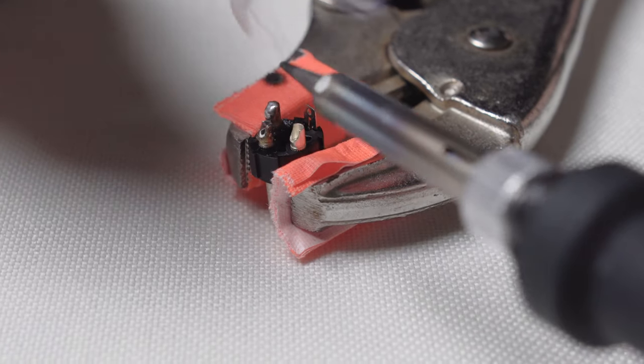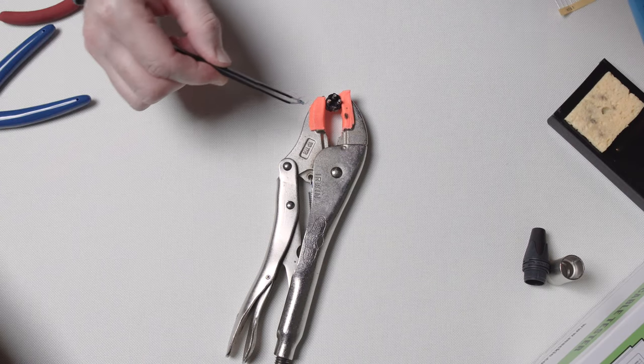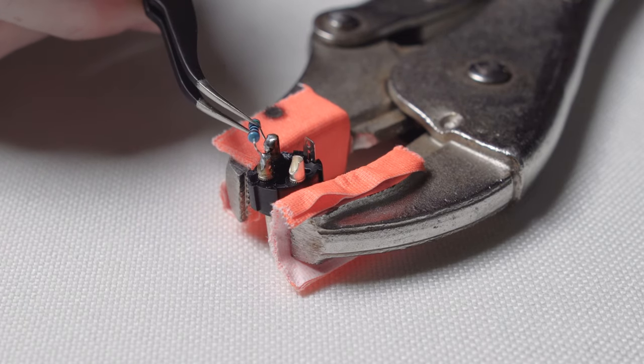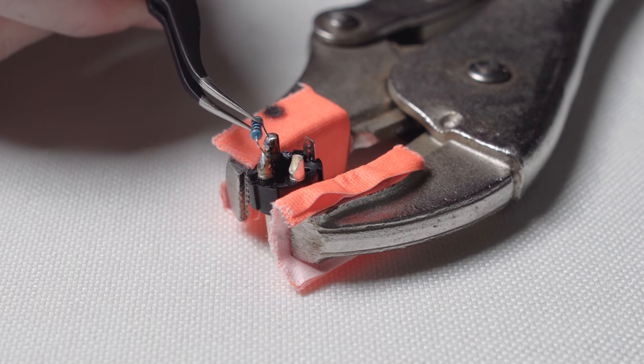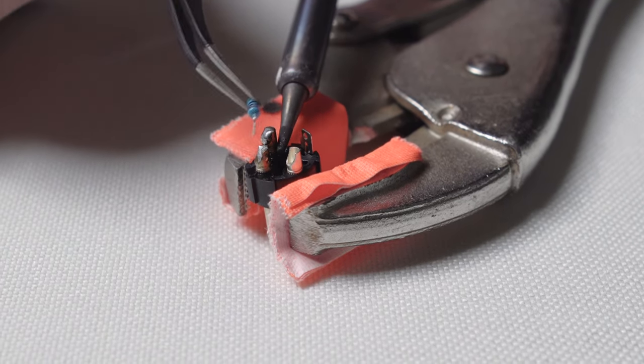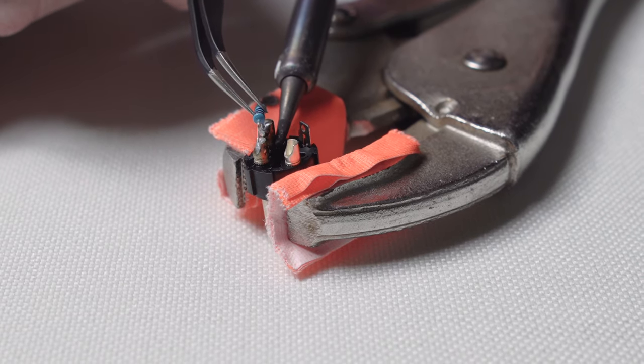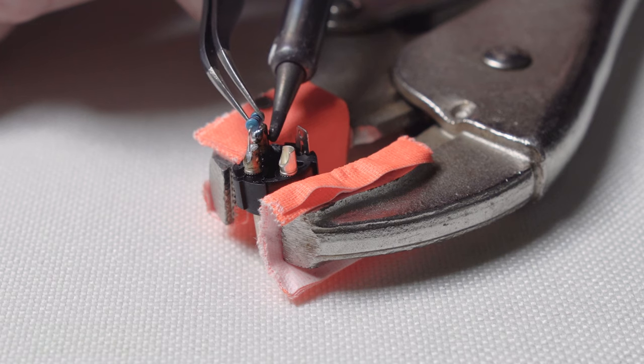And then once that has settled, you can grab your resistor and start to line it up making sure that your leads will fit into pin 2 and 3 and then heat up the pole of pin 2 or 3. Doesn't matter which way you go. And then once the solder's melted again, you can go ahead and place the resistor in the pin.